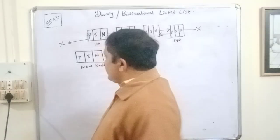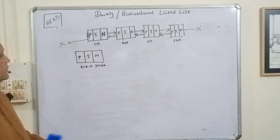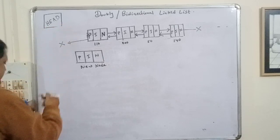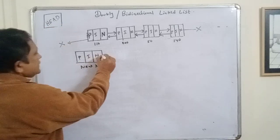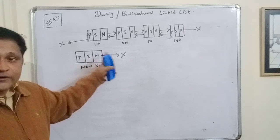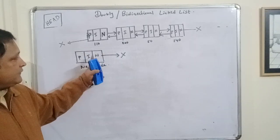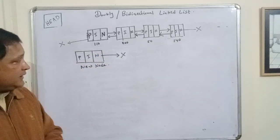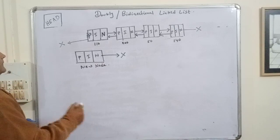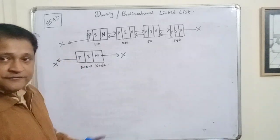In that case, the head will just point to the new node. The next part of the new node should be null — it will point to no node, it will contain no address. And the previous will also be null, because this is going to be the first and foremost node of the linked list. It will be both the first and last node.